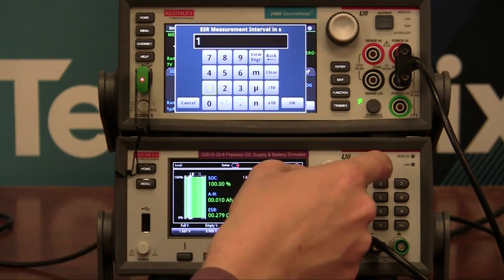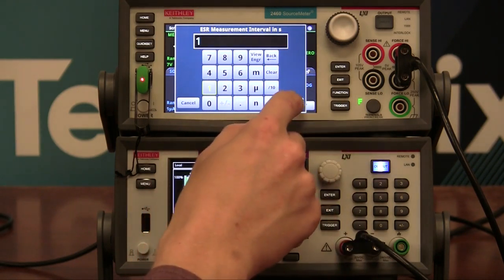And I'm going to take internal resistance measurements every 1 second. So now I can turn this on and get it ready to simulate. And press OK to start the model.